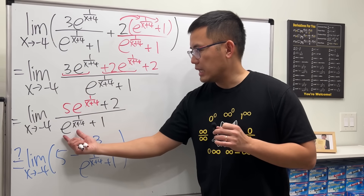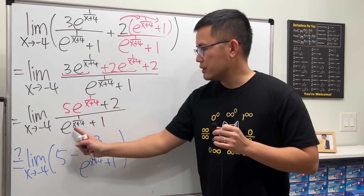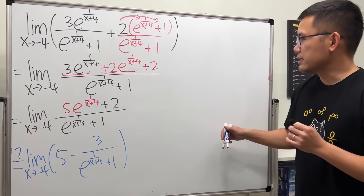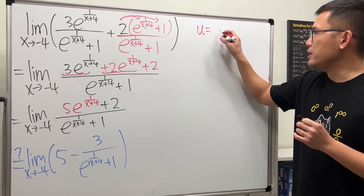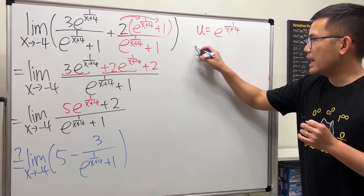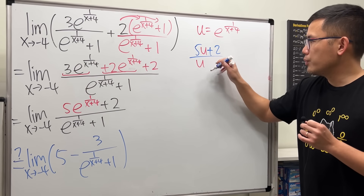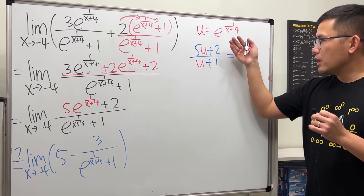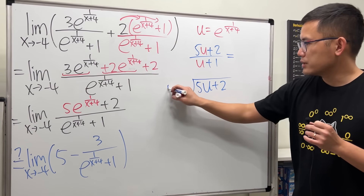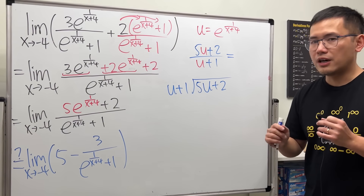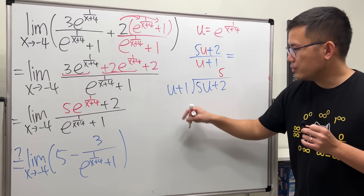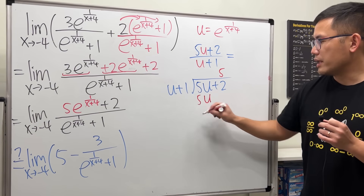Notice the variable part — five times something plus two over the same thing plus one. We can do polynomial long division. If we treat that expression as a variable u, we want to divide five u plus two by u plus one. The setup: five u plus two goes inside, u plus one goes on the outside. We ask: what times u gives five u? The answer is five. Five times u is five u, and five times one is plus five.